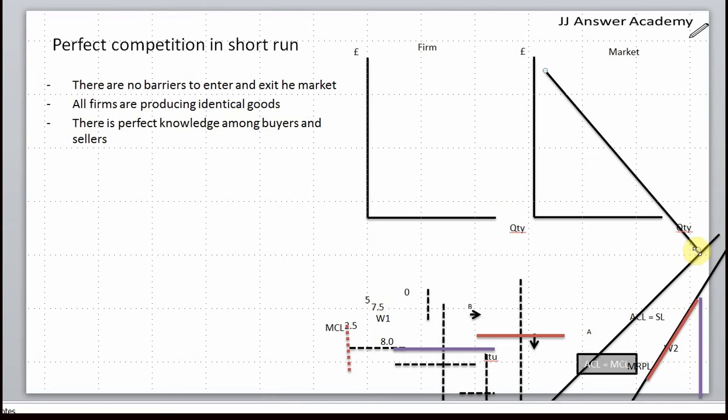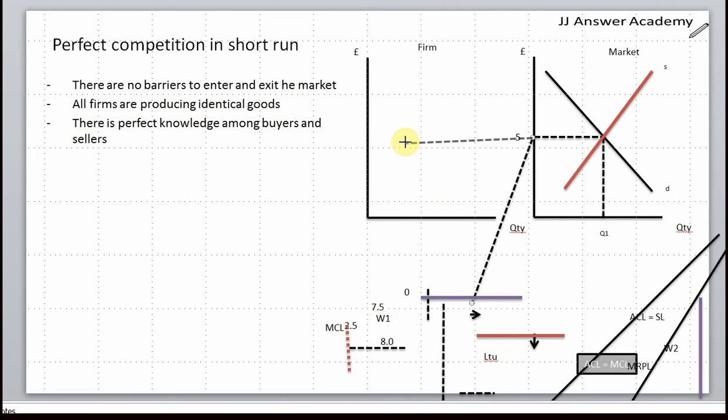In the market we've got the market demand curve and market supply curve. Where they intersect we have the market clearing price, say five pounds, and market clearing quantity say Q1. A firm in the short term can sell as many goods as it wants at the market price, which is five pounds.